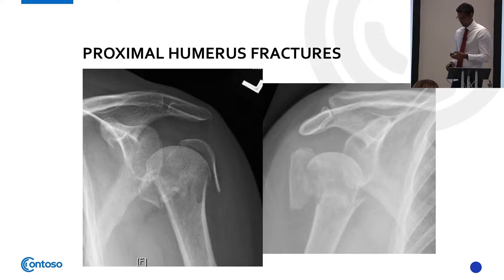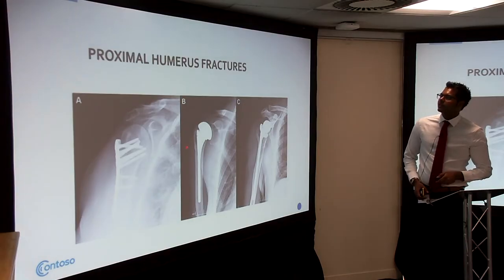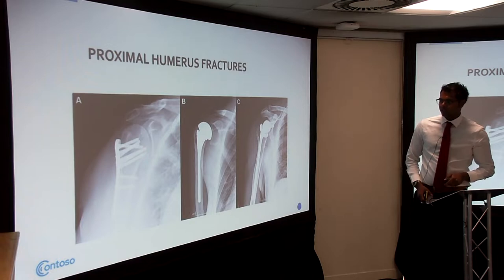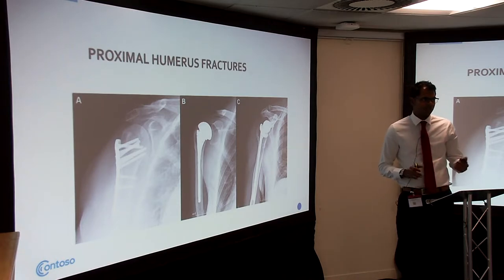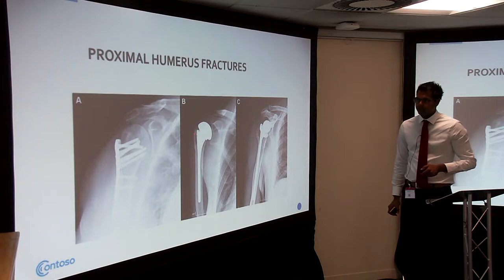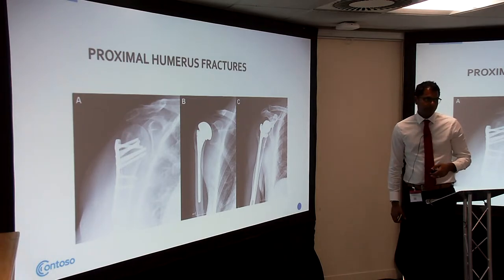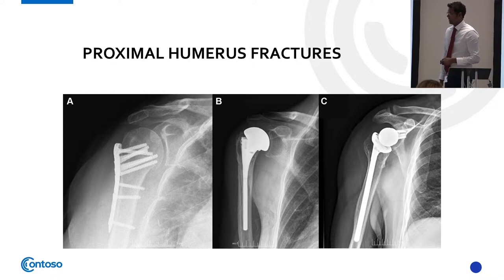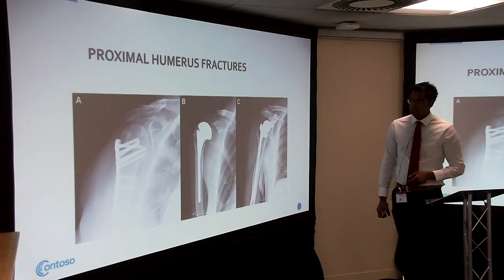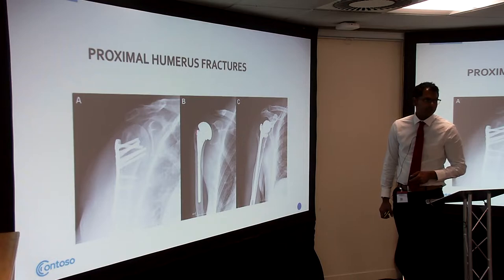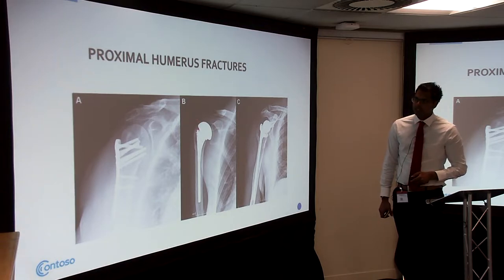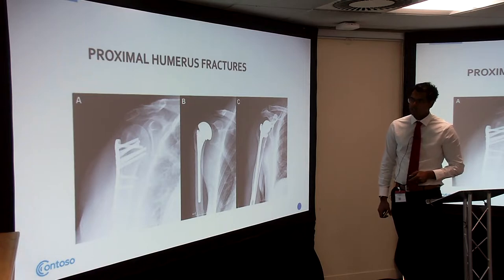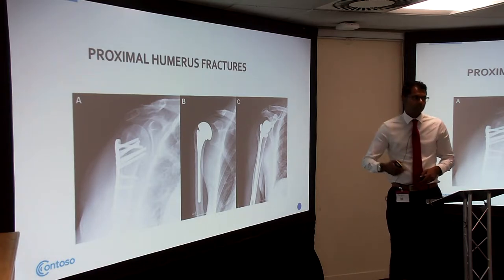For treatment of proximal humeral fractures: plates and screws for three or four part fractures. Two part fractures we can usually manage without much intervention unless really displaced. For more severe cases we can do a hemiarthroplasty — replacing half the ball-and-socket, putting in a ball with a stem down the humeral shaft. We also pass sutures through holes in the prosthesis to reattach the rotator cuff tendons and restore function.